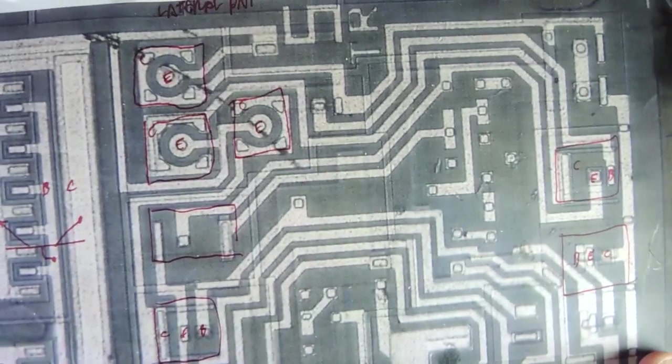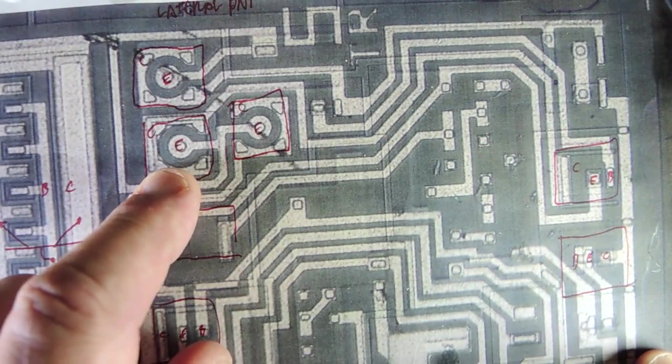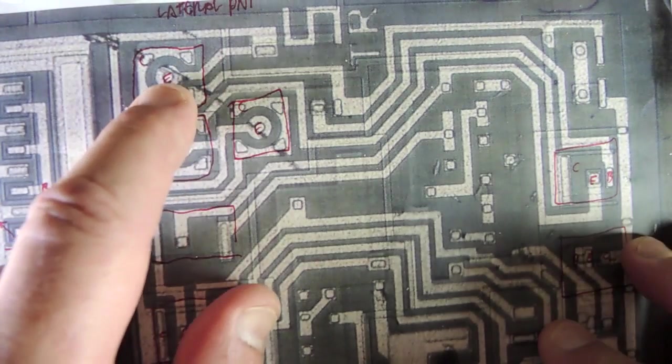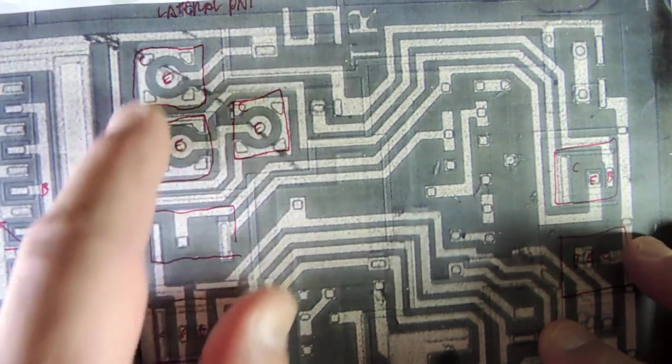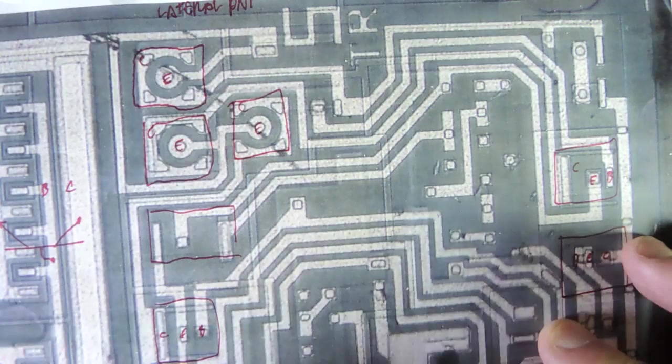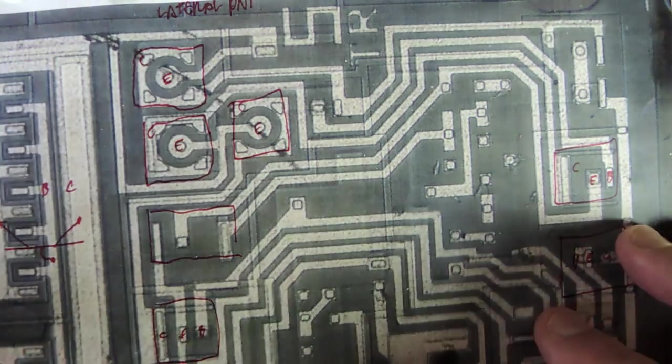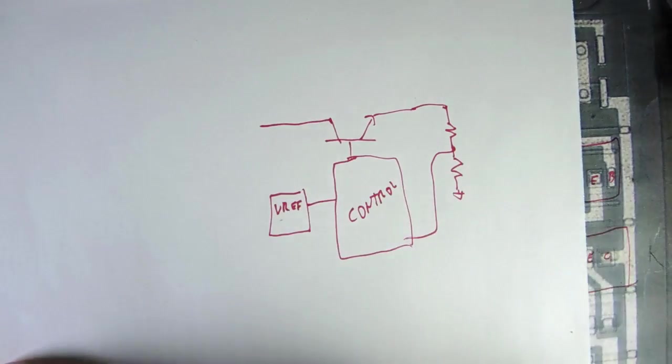And then three PNP transistors, lateral PNPs, and the emitters in the middle. These two emitters are clearly connected together, and this emitter is connected together here. It's a pretty classic pattern, I'm pretty sure, for a bandgap reference. And, of course, that gives us all the building blocks for a classic linear regulator.